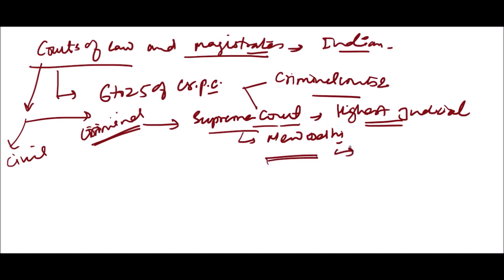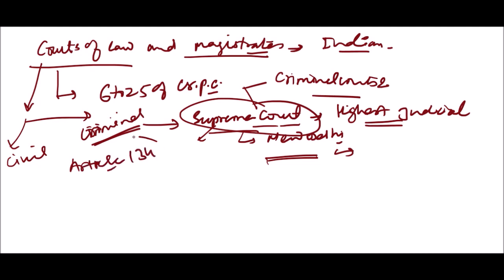The Supreme Court has power to supervise all other courts in India. The law declared by the Supreme Court is binding on all other courts, and it comes under Article 134 of the Constitution of India. This is the supreme-most court.